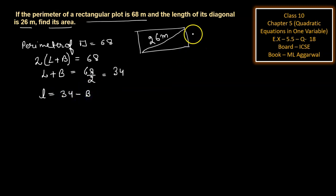Let breadth be x, then length is 34-x. Using the Pythagorean theorem: hypotenuse 26² equals base (34-x)² plus perpendicular x².